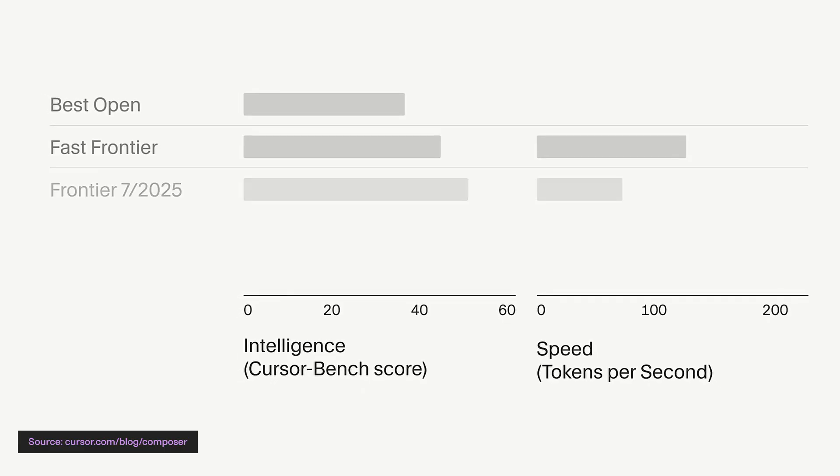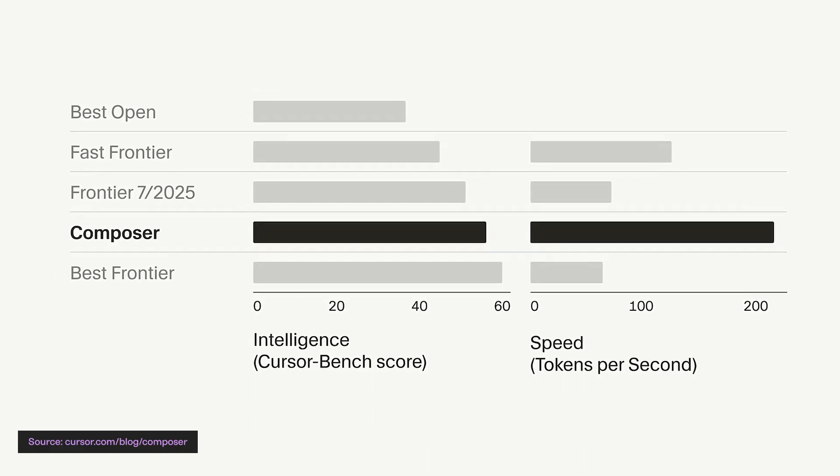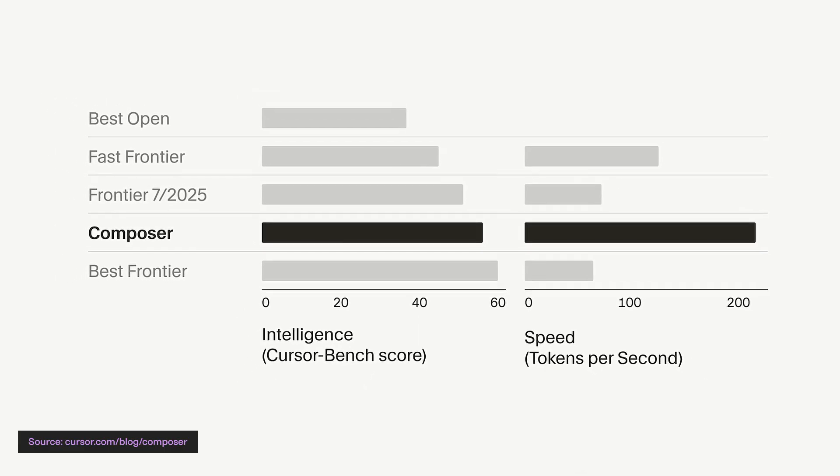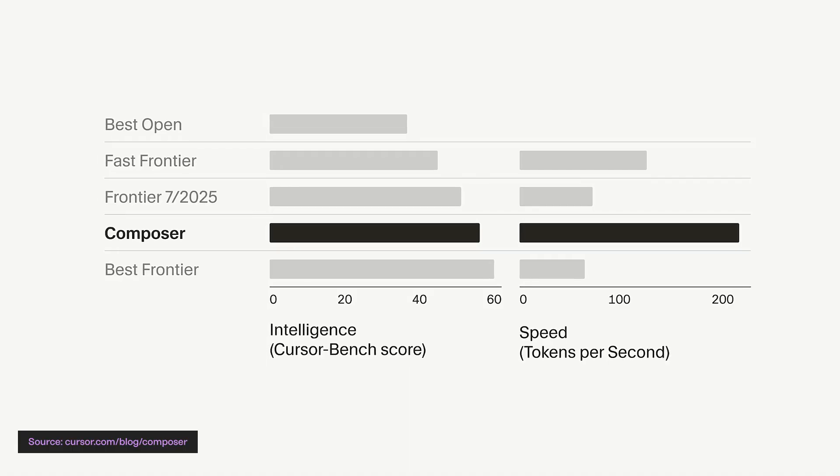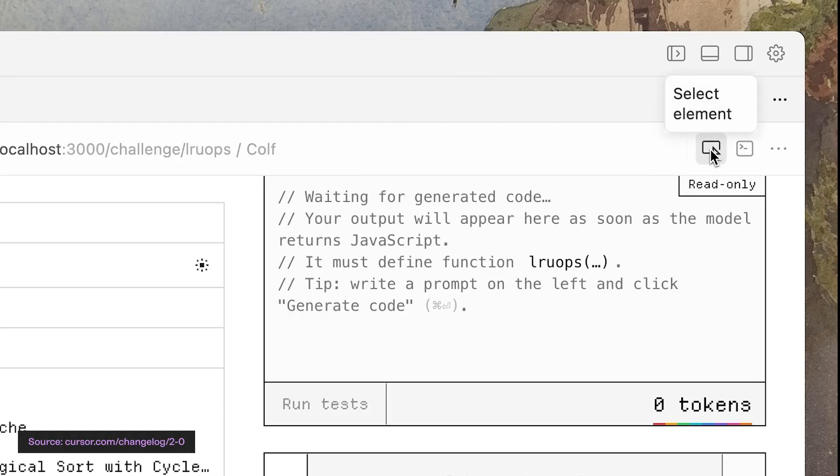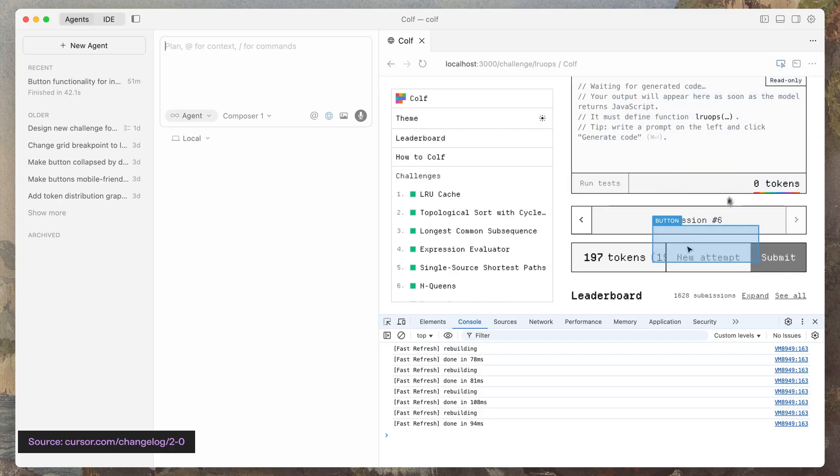They also announced their own agent model called Composer. They say it's almost as smart as GPT-4 and Claude Sonnet but four times faster and better at working in large codebases. They called it Composer, but honestly I tried and I can't make music for it.